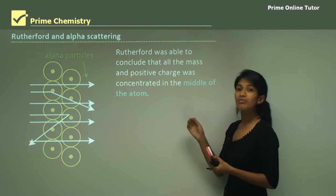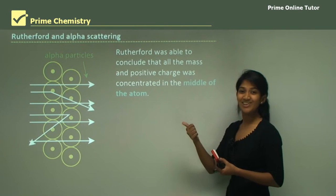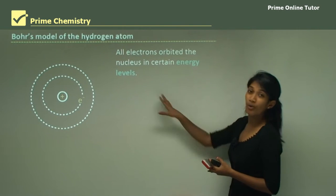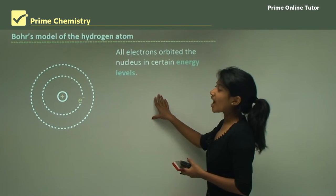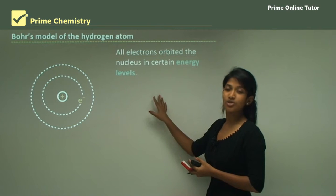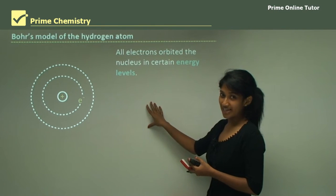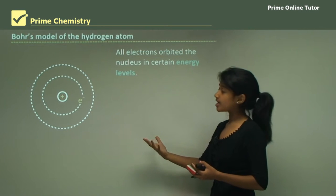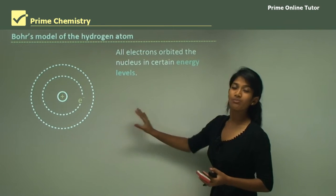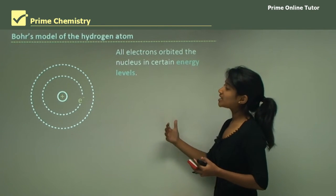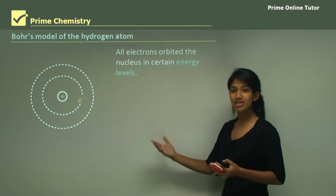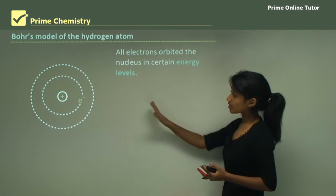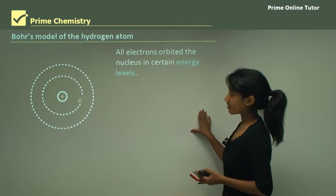To recap so far, we've learned about Dalton, Thomson, and Rutherford. Now let's move on to Bohr. Bohr's model of the hydrogen atom — he mainly focused on the hydrogen atom because it was quite simple. He was able to work with it more efficiently and used quantum physics as well to come up with his theories.